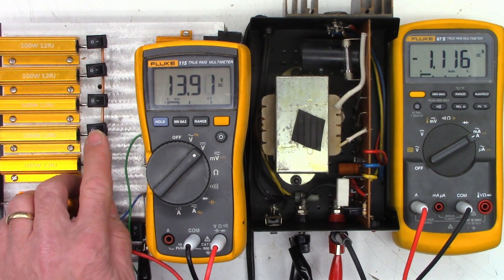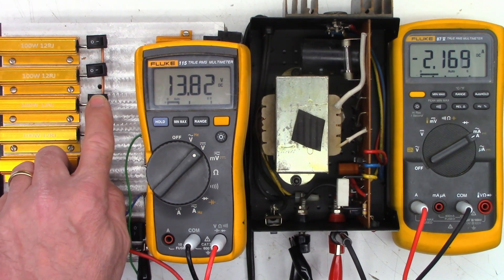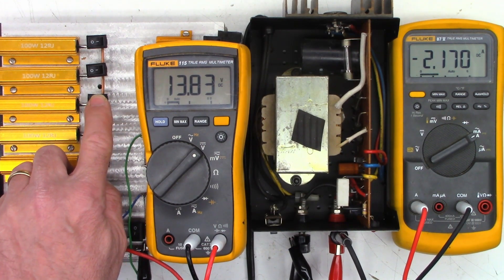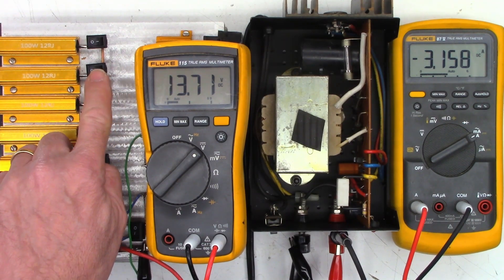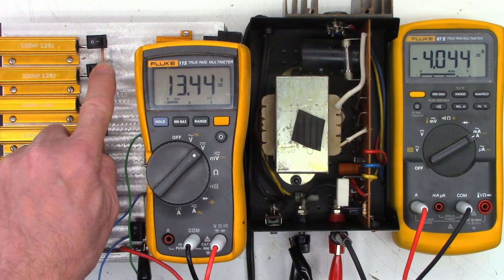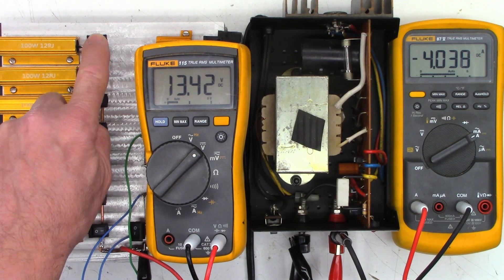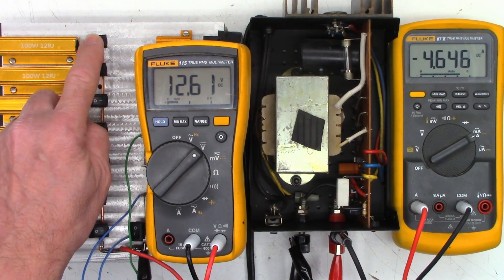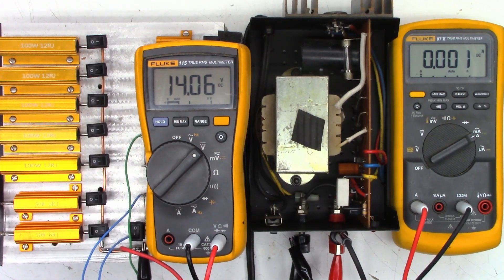So there's 1.1 amps and I'm down to 13.9 volts. 2.16 amps, 13.8 volts. 3.15 amps at 13.7 volts. 4.04 amps at 13.4 volts output. And 12.6 volts at 4.6 amps. So I'm gonna say the power supply is working about as good as it was intended to work.